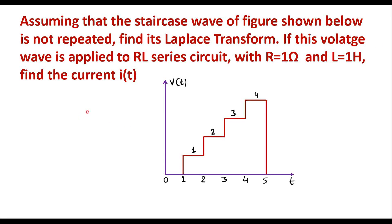In this video, let me consider one numerical on Laplace transform. Assuming that the staircase wave shown below is not repeated, find its Laplace transform. If this voltage wave is applied to an RL series circuit with R equal to 1 ohm and L equal to 1 henry, find the current I of t. So the first thing is we are supposed to find the Laplace transform of this staircase waveform, then apply it as input to the series RL circuit and find the current.